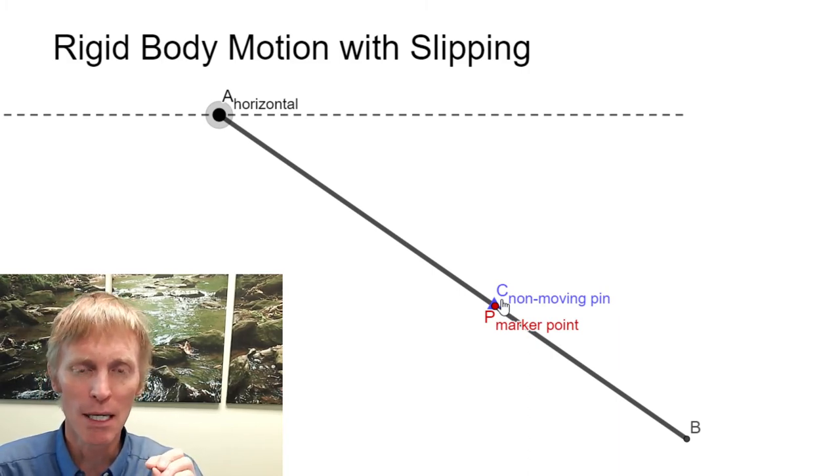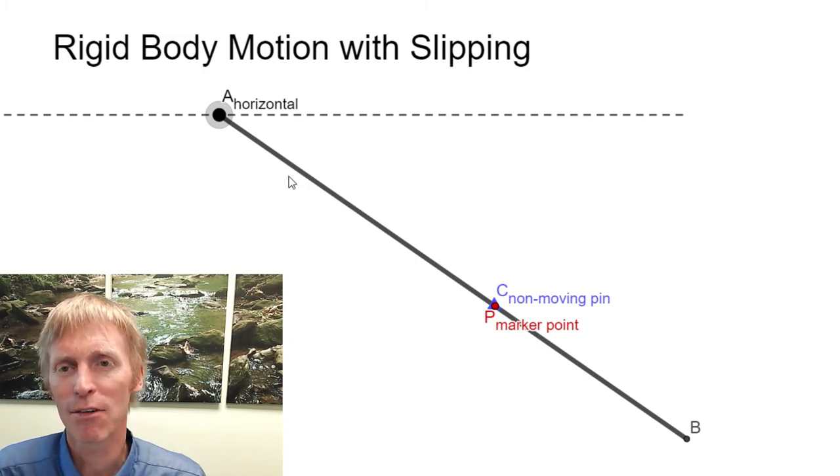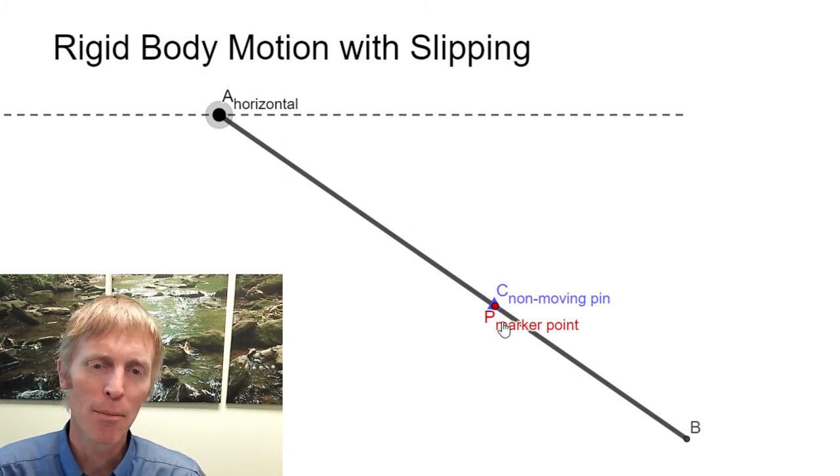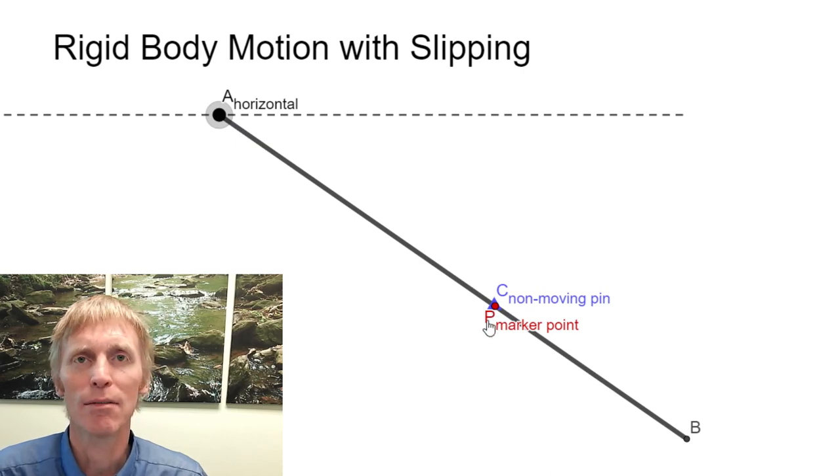They're going to be three non-zero terms building from the velocity of A. P relative to A, and then C relative to P, making sure all of your subscripts cancel.